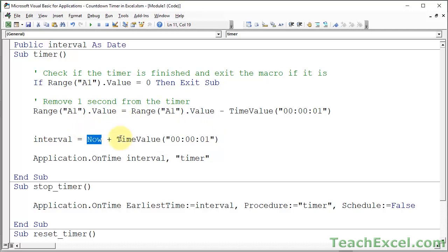So we add one second to the current time. So it's one second in the future. Technically this would be something like the future time at which this macro should run. So change this if you want to change the interval.